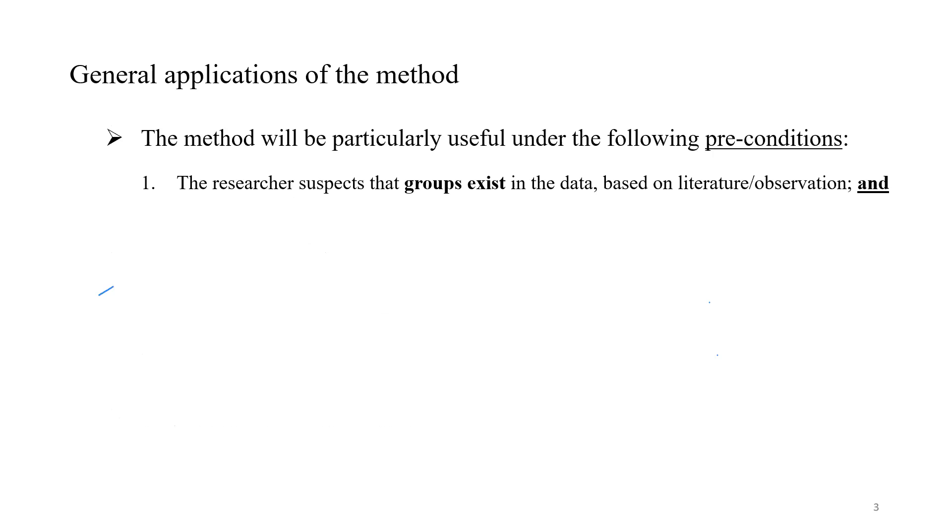This method will be particularly useful if a researcher has the following preconditions. First, he suspects that groups exist in data based either on literature or on observation of the real world. There must be some kind of driver that leads us to suspect that groups exist. This is particularly relevant because we will apply fuzzy clustering, and under these methods you can find groups basically anywhere, but the meaning of those groups has to be a precondition.